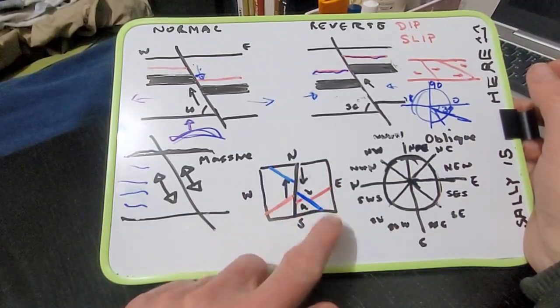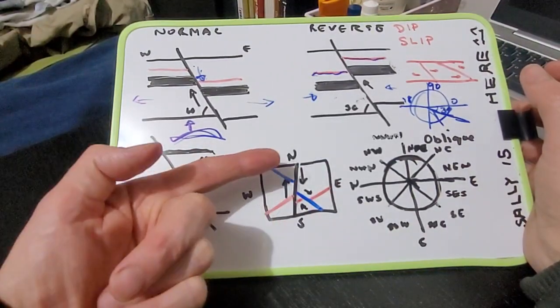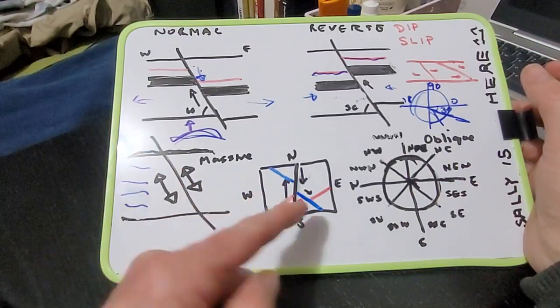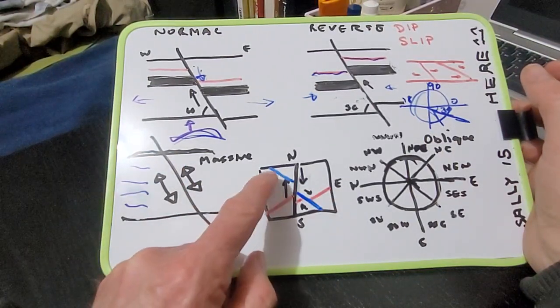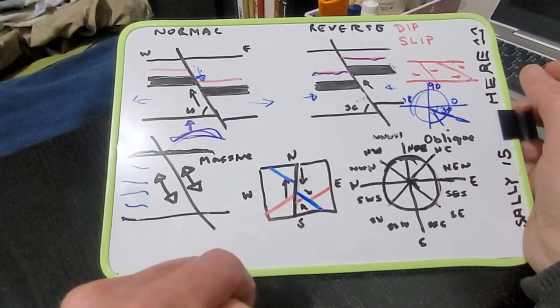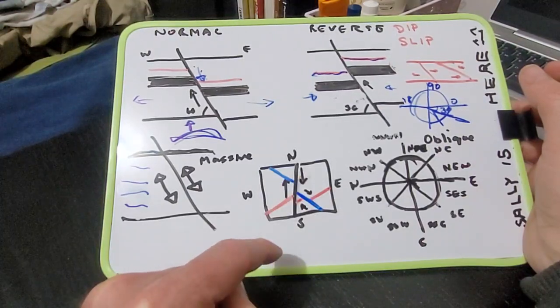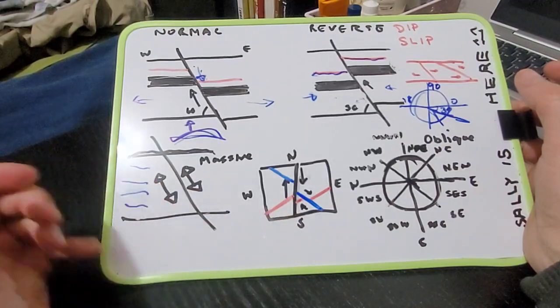So in this graph here, we have the earliest rock fracture, which is the red. And then that's been cut by the blue fracture. And the black fracture has been the last one.